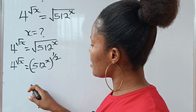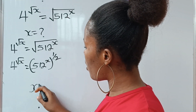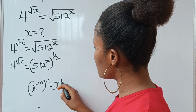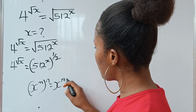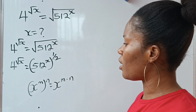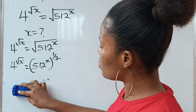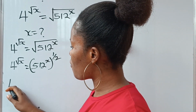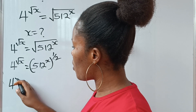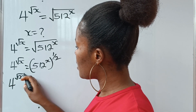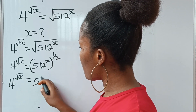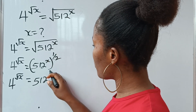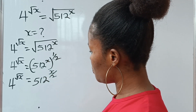Recall that x to the power of m raised to the power of n is equal to x raised to the power of m multiplied by n. So I'm going to do the same thing here. We have 4 raised to the power of root x is equal to 512 with x times half, which gives us x over 2.